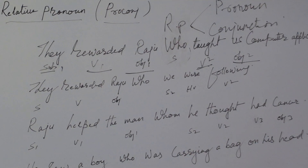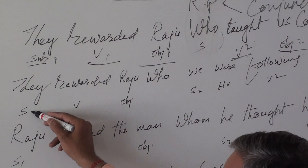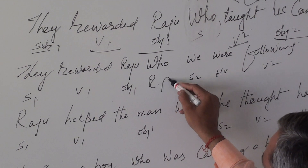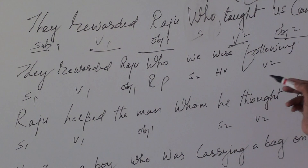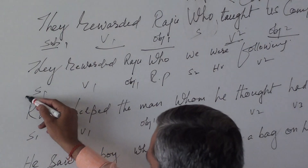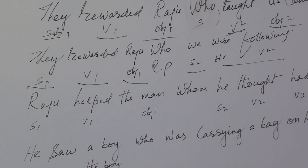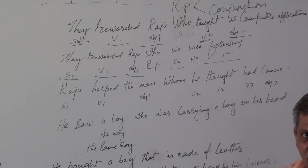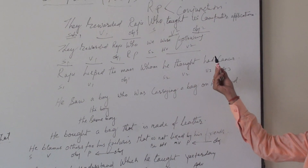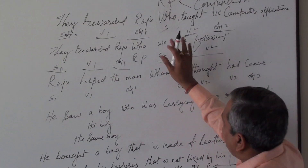They rewarded Raju who we were following. Now see: they — subject one, rewarded — verb one, Raju — object one, who — relative pronoun, we — subject two, were following — verb two. Again: there is subject two and verb two, but we need an object. Because there is another subject, we must have either a conjunction to join two subjects or a relative pronoun acting as object. So 'who' is wrong here and 'whom' should be used.